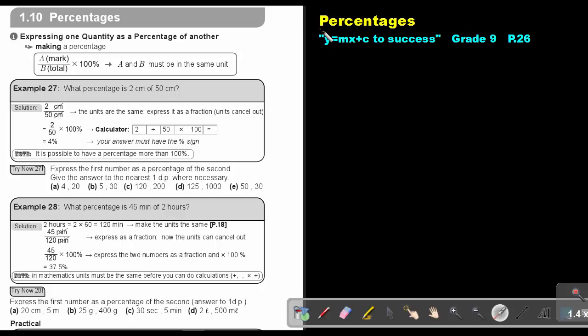Part 21. Percentages. You will find this on page 26 in the Namibia Mathematics Grade 9 textbook, Y equals MX plus C to success. Let's look at the first one. Expressing one quantity as a percentage of another. Therefore, making a percentage, you just take the first amount out of the second amount and you multiply by 100%. Remember, A and B must be in the same unit.